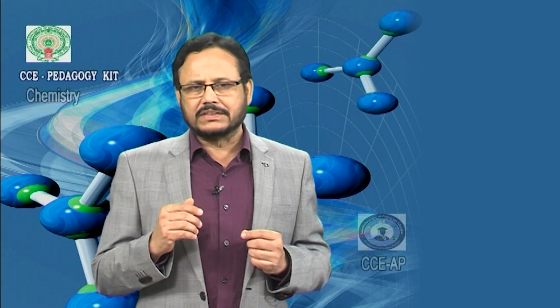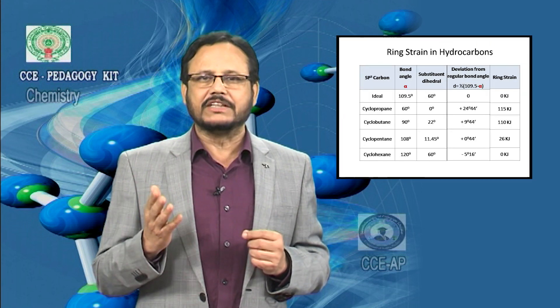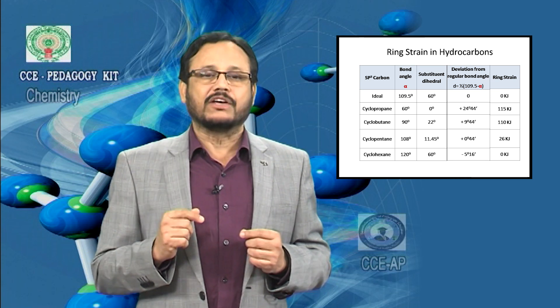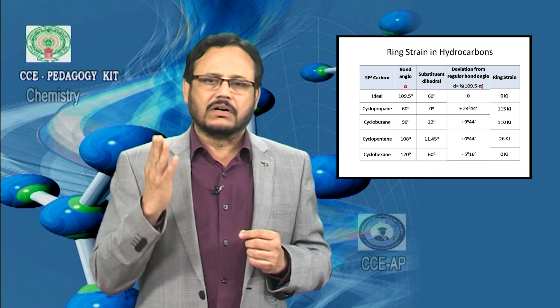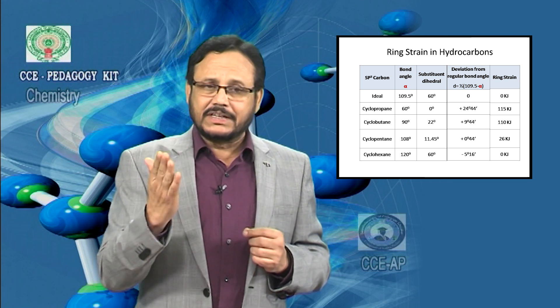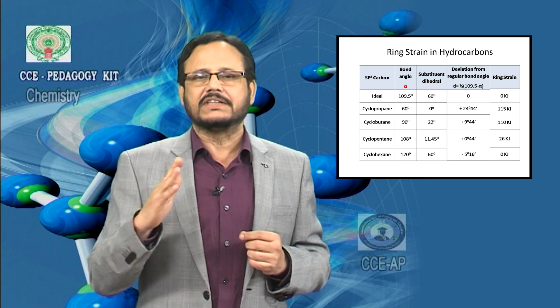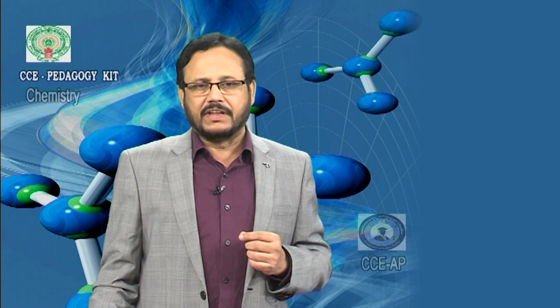Now I am going to determine the angle strain present in the cycloalkanes. To determine the angle strain or ring strain, we calculate the deviation of the regular angle from 109 degrees 28 minutes. As you can see on the screen, d (the deviation) equals half of (109.5 degrees minus α), where α is the bond angle present in the cycloalkane — 60 degrees for cyclopropane, 90 degrees for cyclobutane, 108 degrees for cyclopentane, and 120 degrees for cyclohexane. Some of these are less than 109.5 degrees and some are above, giving either positive or negative deviation.